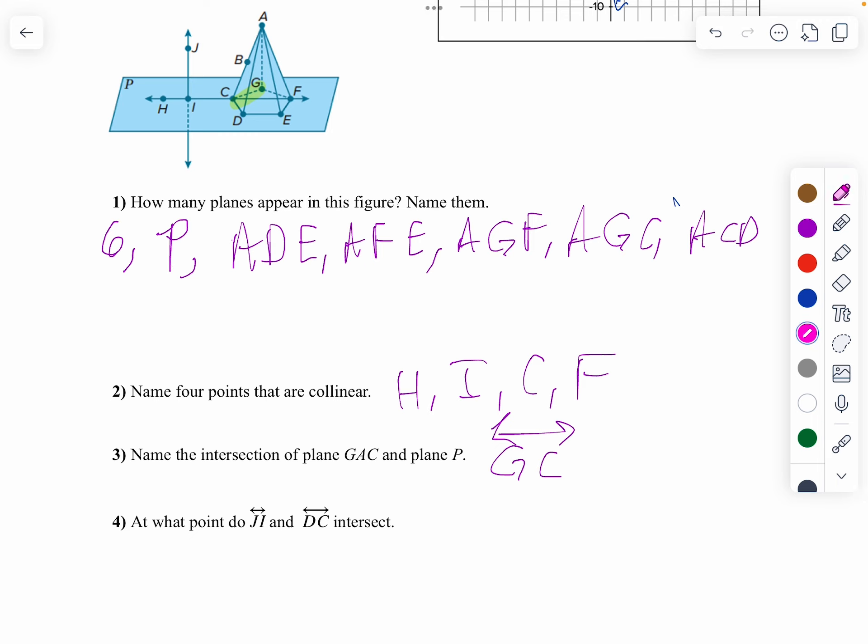And then on the next one, at what point do line J, I, so we're going to go J, I, and D, C intersect. And I would say that it looks like they intersect right around J, don't they? I'd have to extend my line out for D, C. But remember, lines go forever. So I'm going to say around point J. It might not be exactly at J, but it would be pretty close to that. I didn't even need to write the word point there, although I did.